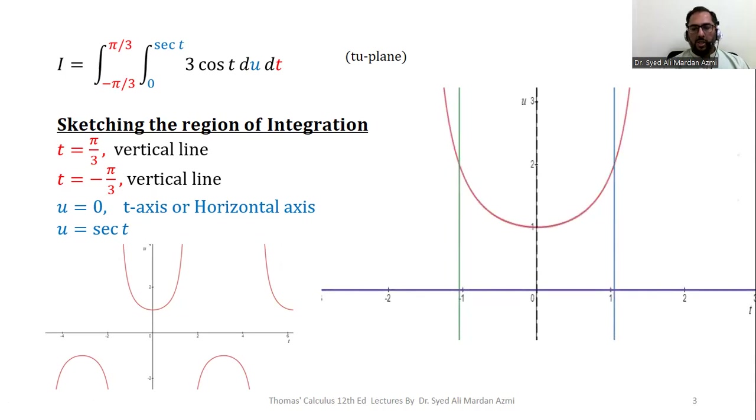So we have something like this: our horizontal axis is represented by the purple line, this is the t-axis, and this is our u-axis.